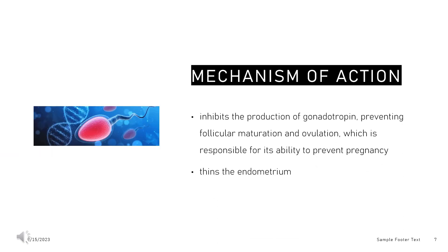Mechanism of action: Medroxyprogesterone acetate (MPA) inhibits the production of gonadotropin, preventing follicular maturation and ovulation, which is responsible for its ability to prevent pregnancy. This action also thins the endometrium. MPA reduces nuclear estrogen receptors and DNA synthesis in epithelial cells of the endometrium. MPA can also induce P53-dependent apoptosis in certain cancer cell lines and inhibit GABA receptors.